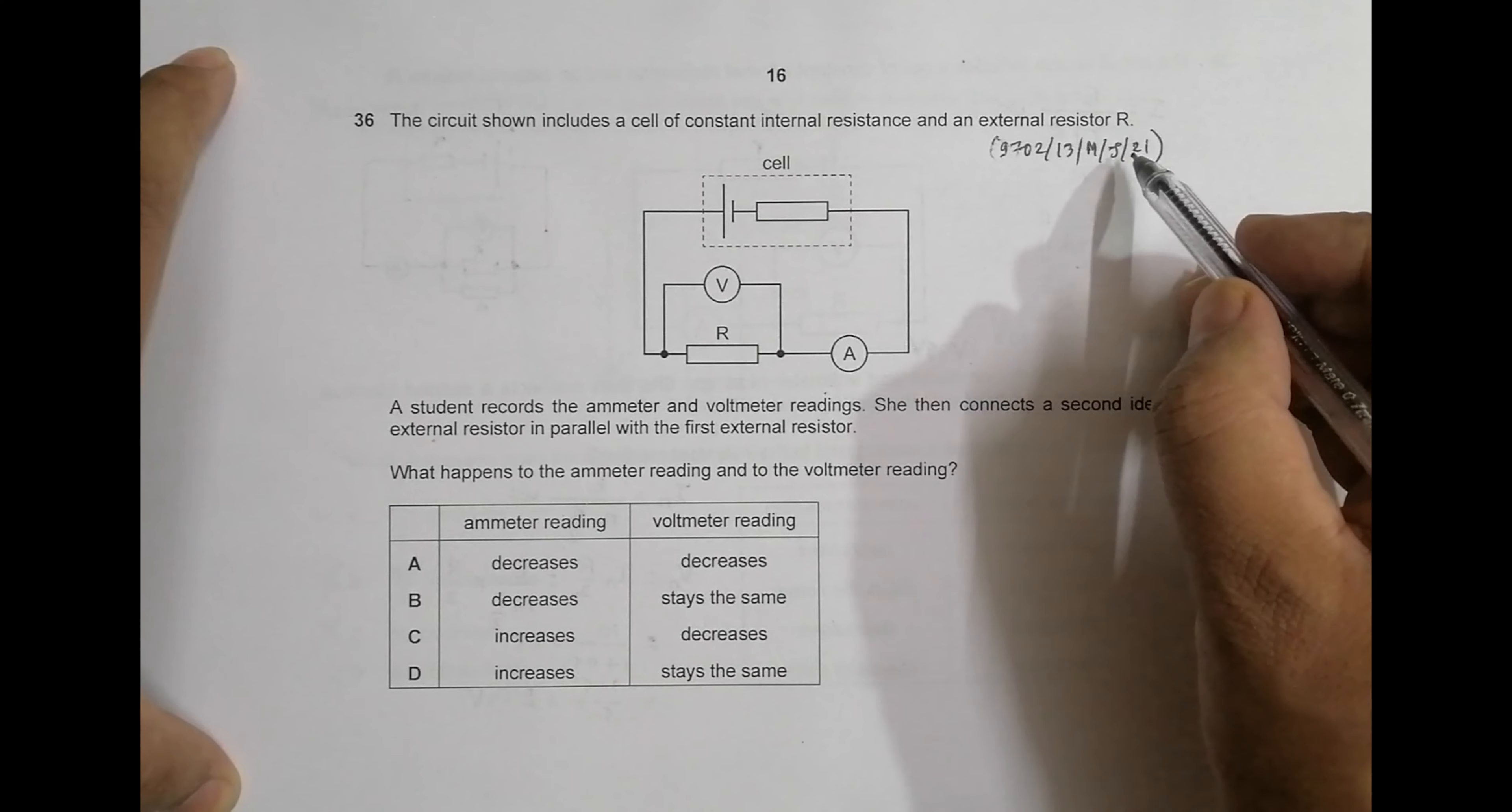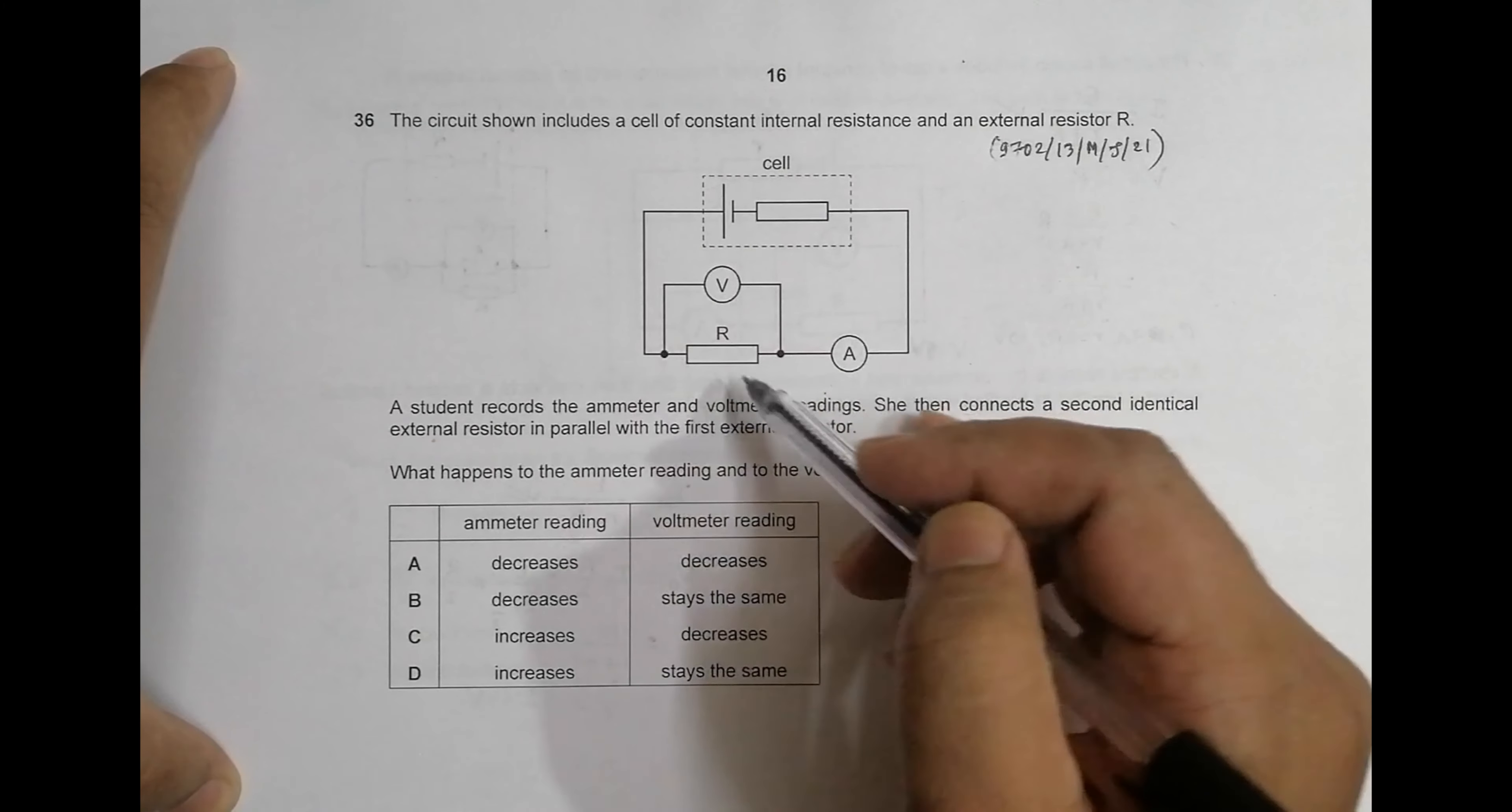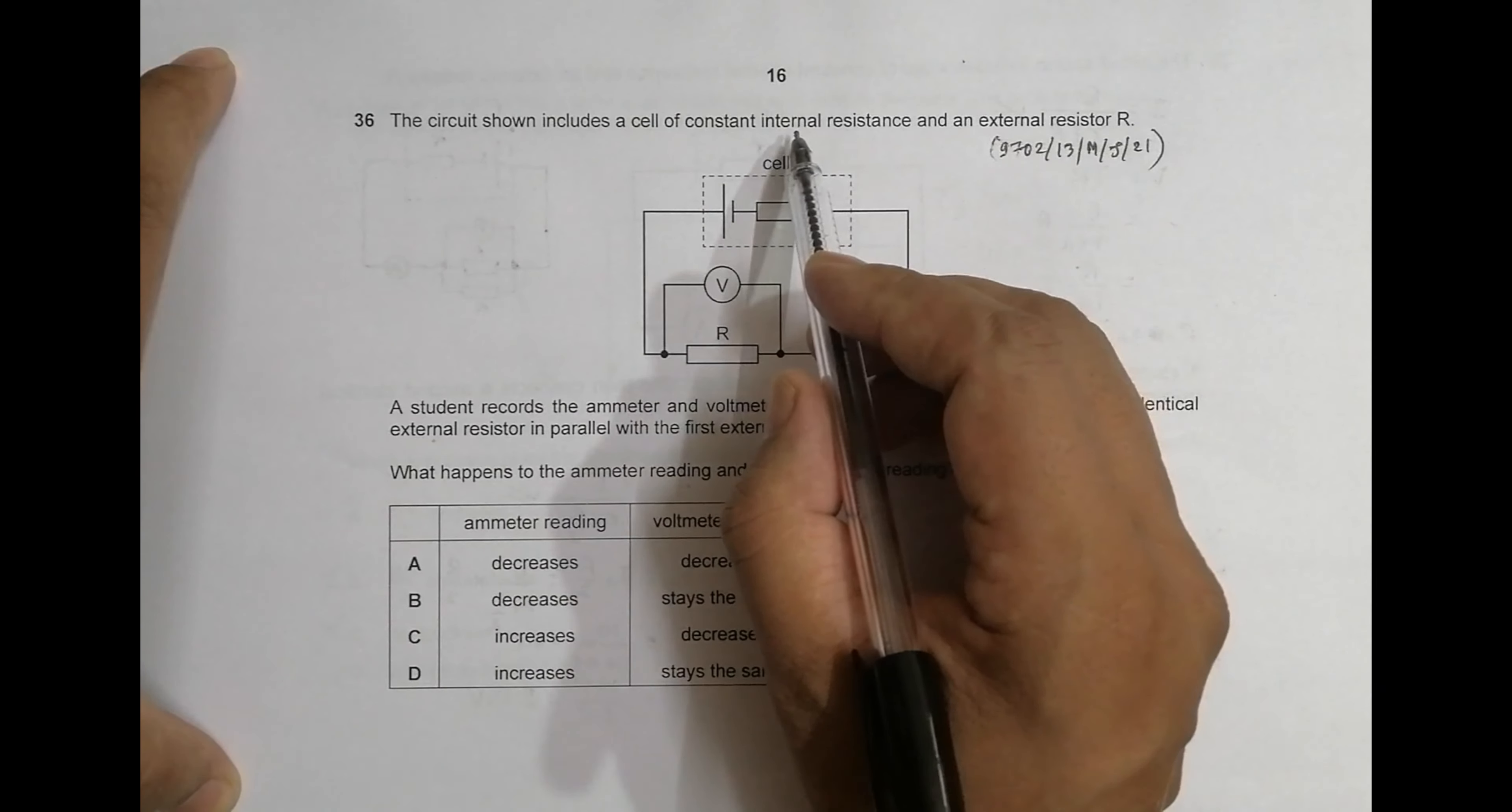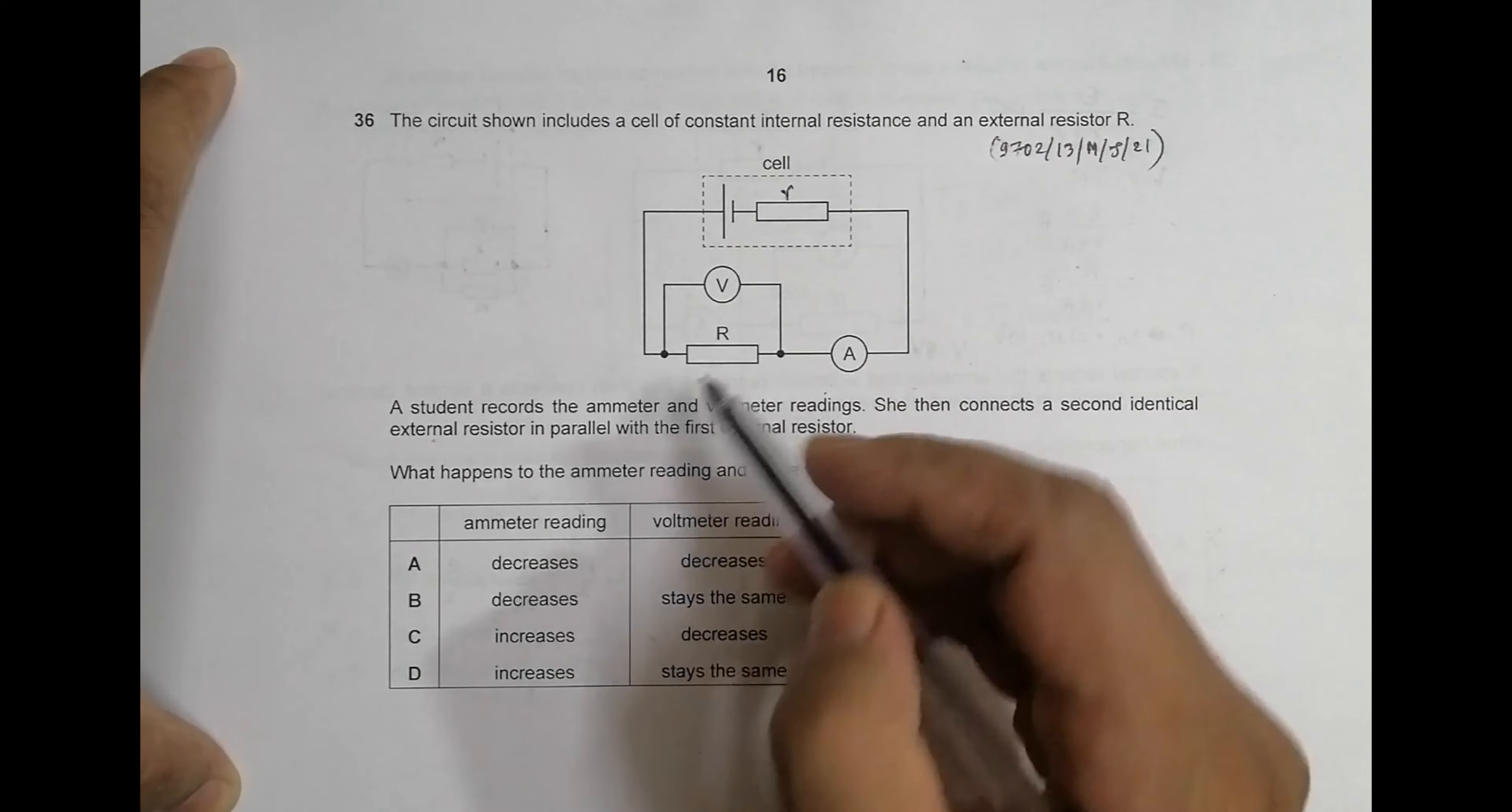Hello folks, this is a 2021 May-June Paper 13, question number 36. This question is concerned with the chapter current electricity. As you can see from the diagram, the circuit shown includes a cell of constant internal resistance, which is a small r, and an external resistor R.